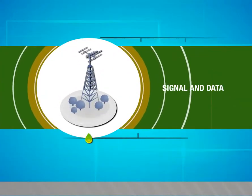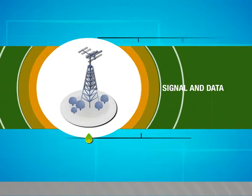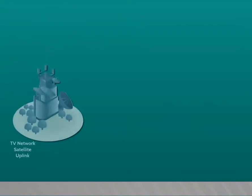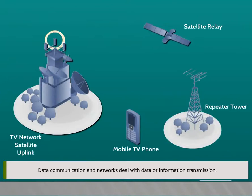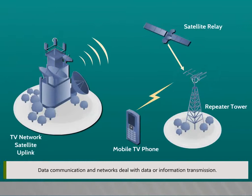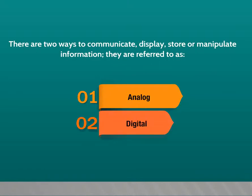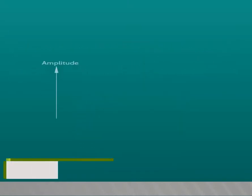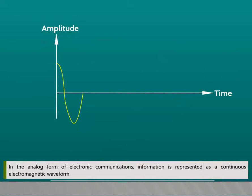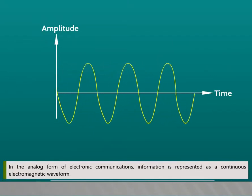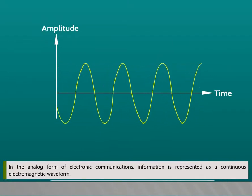Signal and Data. Data communication and networks deal with data or information transmission. There are two ways to communicate, display, store, or manipulate information: Analog and Digital. In the analog form of electronic communications, information is represented as a continuous electromagnetic waveform.